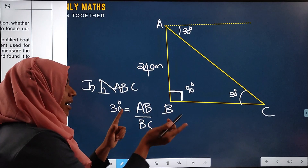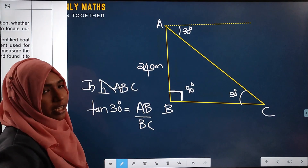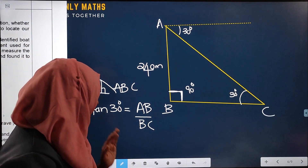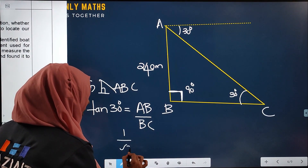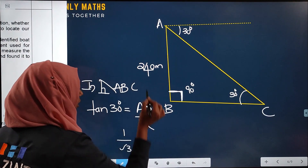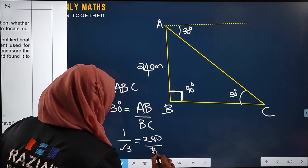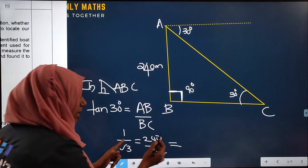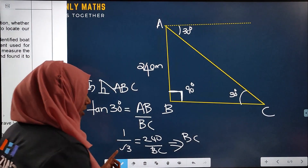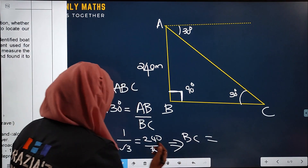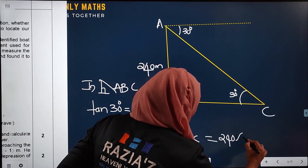Opposite side divided by adjacent side — tan is the relevant ratio. So tan 30 = 1/√3 = AB/BC = 240/BC. Therefore BC = 240 × √3, which is 240√3 meters.